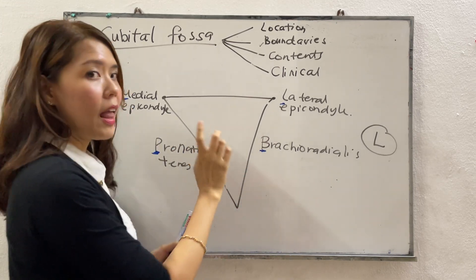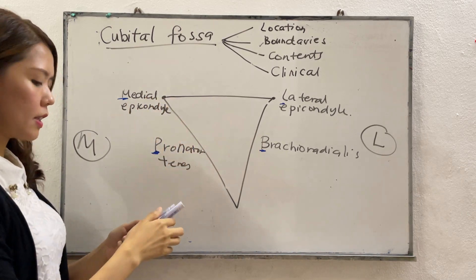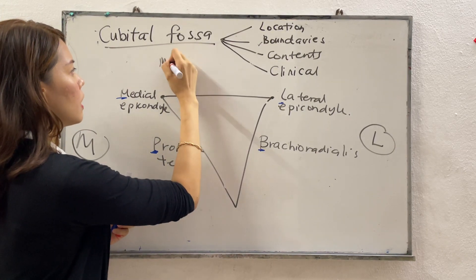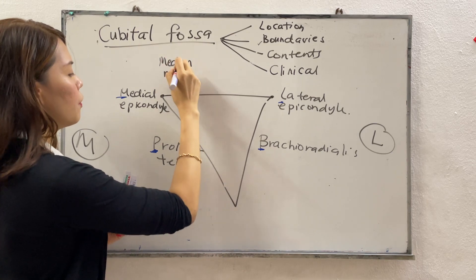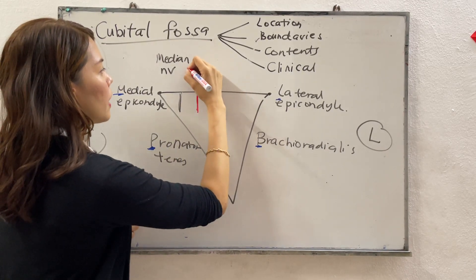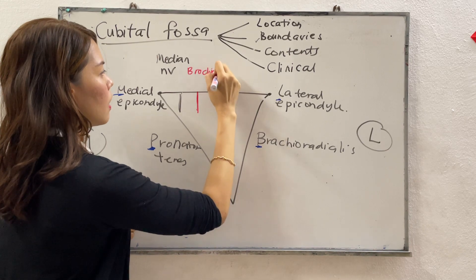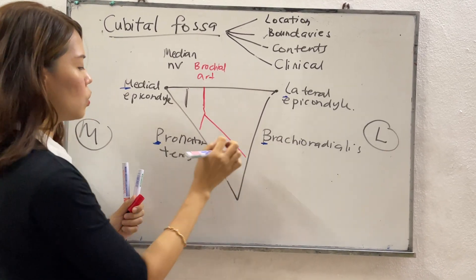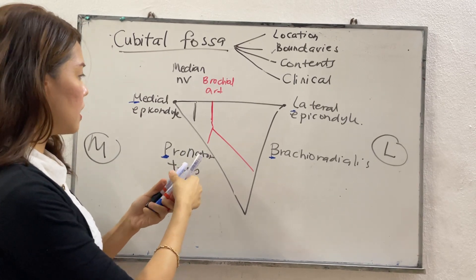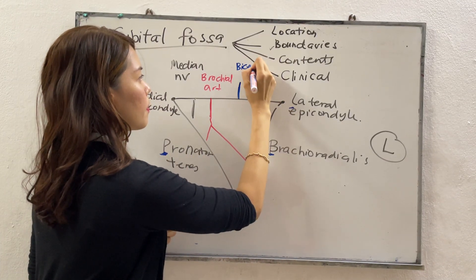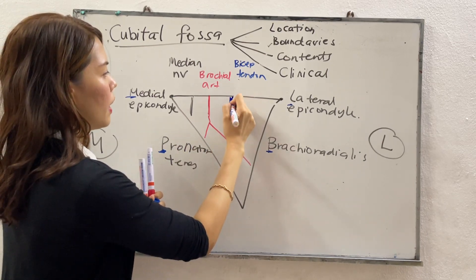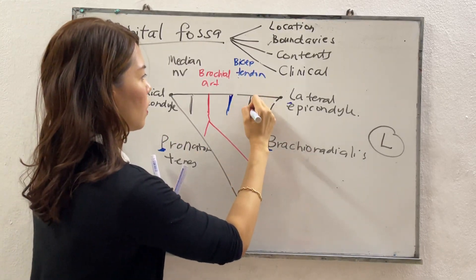Next, we talk about the contents of the cubital fossa. There are four contents. Number one is the median nerve. The second structure is the brachial artery, which will later branch into the ulnar artery and also the radial artery. The next structure is the bicep tendon, and the next structure is the radial nerve.